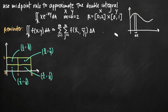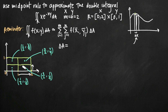Let's talk about delta a. When we had one variable, we dealt with delta x — just the width of each rectangle. Now in three-dimensional space we add one dimension, so we must account for both the width and the height of the rectangle. Delta a equals the width of one small rectangle multiplied by the height. This rectangle goes from 1 to 2, so the width is 1; it goes from 0 to one half, so the height is one half. Therefore delta a equals 1 times one half, which equals one half.